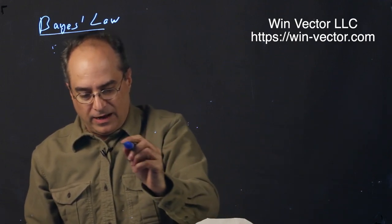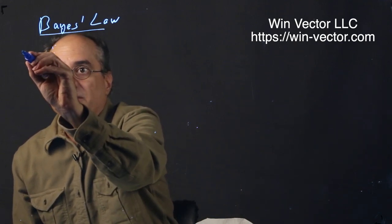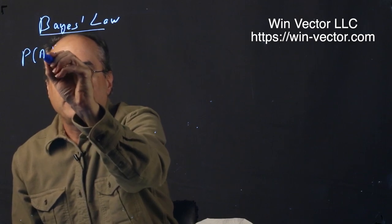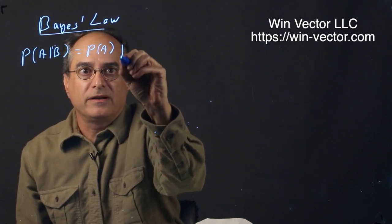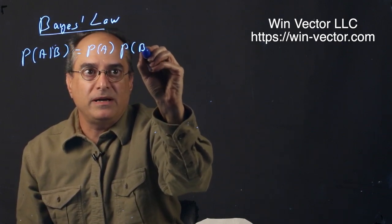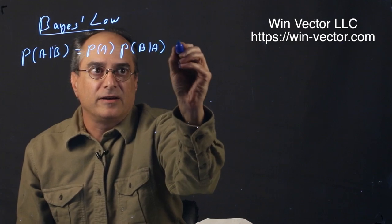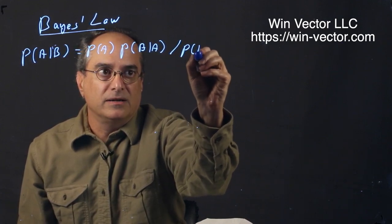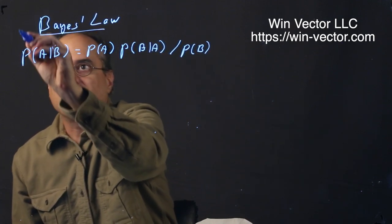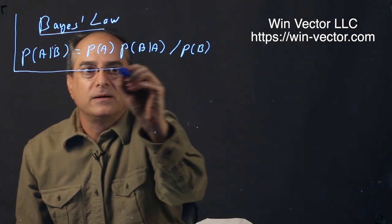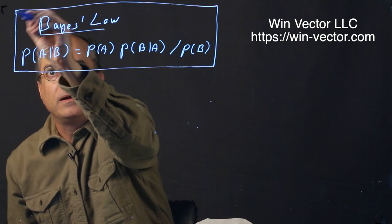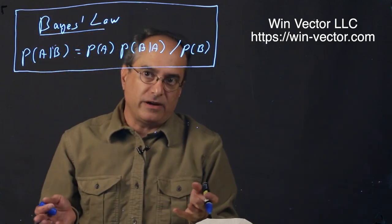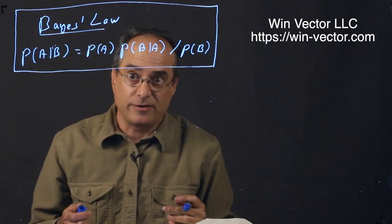Now that we've recovered the space, we repeat Bayes' Law is P(A given B) equals P(A), prior probability, times the flipped version, P(B given A) divided by P(B). This is Bayes' Law. Once we trust it, we don't need the derivation. And I find the derivation easier than remembering it.